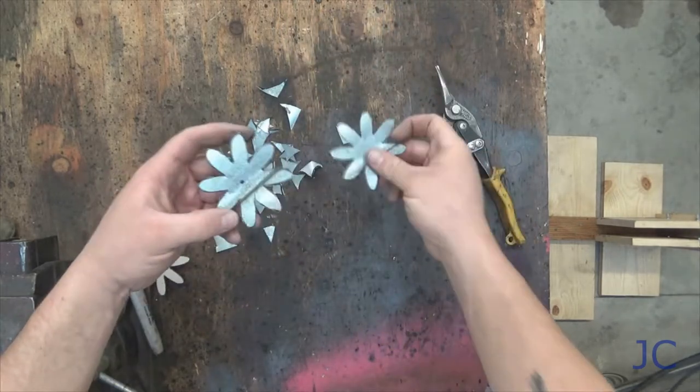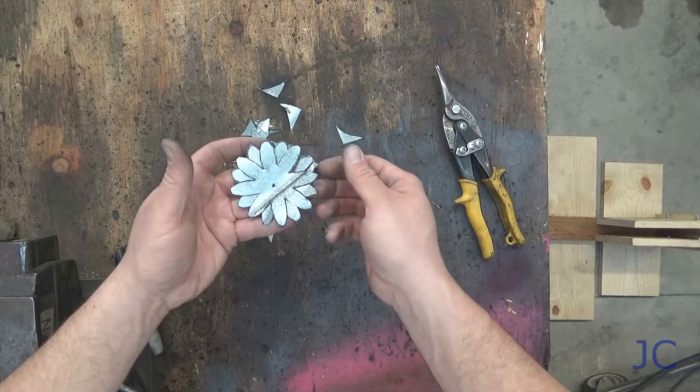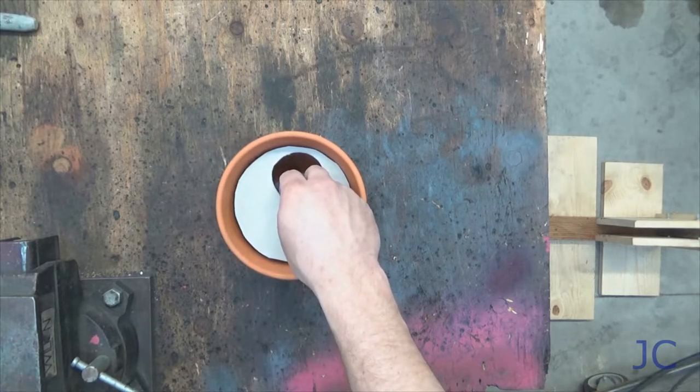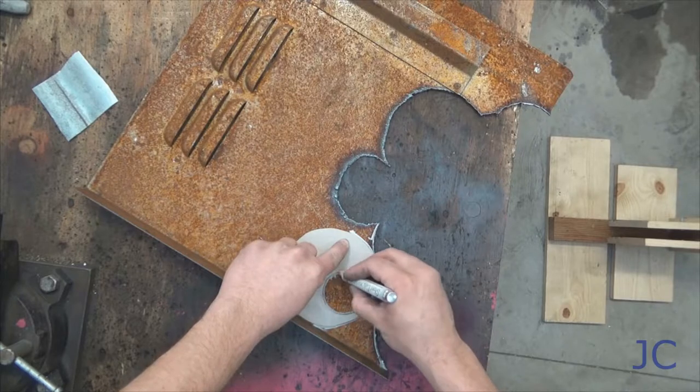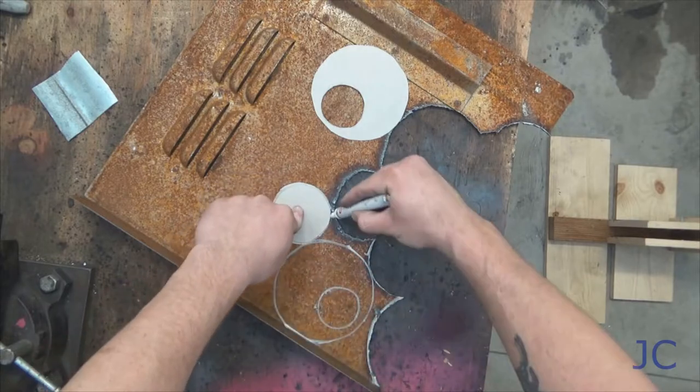It's important that when you're making your template you find a center on the petals, that way you have somewhere to mark and punch later for the hole for the stem. I'm going to use a terracotta pot for the flower. Here are the templates that fit in the pot, and you're going to trace them onto a piece of metal so we can cut it out in the proper shape.